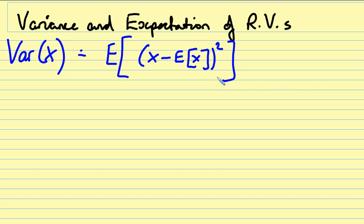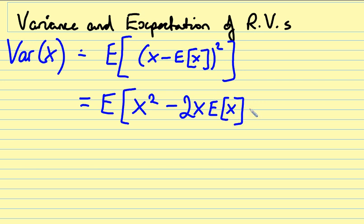Now we can do a little bit of rearranging here. The first thing that's always very rewarding to do, let's pull that quadratic apart. So what this is, this is the expectation of x squared minus 2x multiplied by the expectation of x plus the expectation of x all squared.